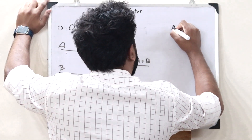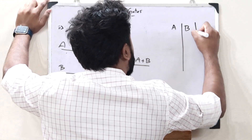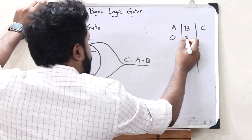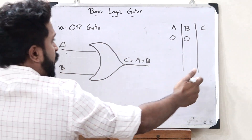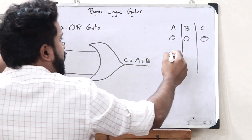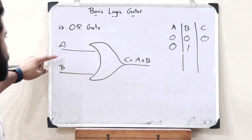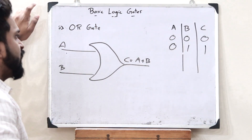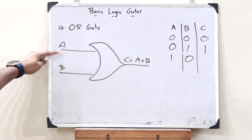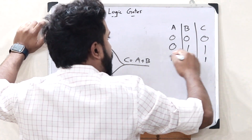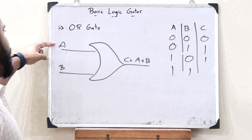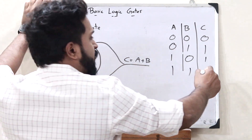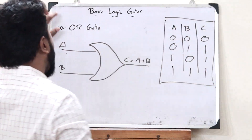Let us draw the truth table of this OR gate. We have inputs A and B and output C. If A is 0 and B is 0, the output C is equal to 0 plus 0, which is 0. If A is 0 and B is 1, C is equal to 0 plus 1, which is 1. If A is 1 and B is 0, we have 1 plus 0, which is 1. Finally, if A is 1 and B is 1, C is equal to 1 plus 1 — the binary OR of 1 plus 1 is 1. This is the truth table of the OR logic gate.